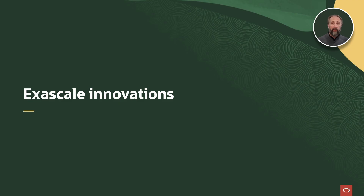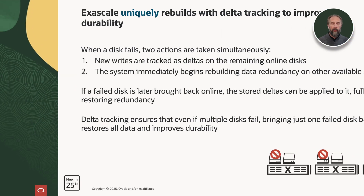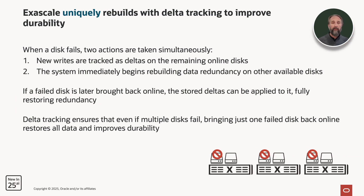Let's change gears and talk about innovations in Exascale since it was introduced in Exadata System Software 24.AI. Exascale uniquely rebuilds with delta tracking to improve durability. When a disk fails, two actions are taken simultaneously: the new writes are tracked as deltas on the remaining online disks, and the system immediately begins rebuilding data redundancy on other available disks. If a failed disk is brought back online, the stored deltas can be applied to it, fully restoring data redundancy. Delta tracking ensures that even if multiple disks fail, bringing just one failed disk back online restores all data and improves data durability.